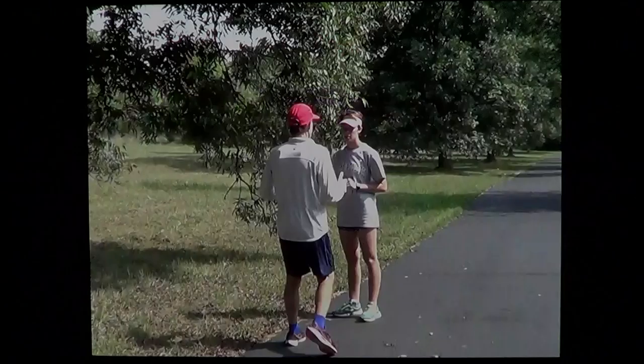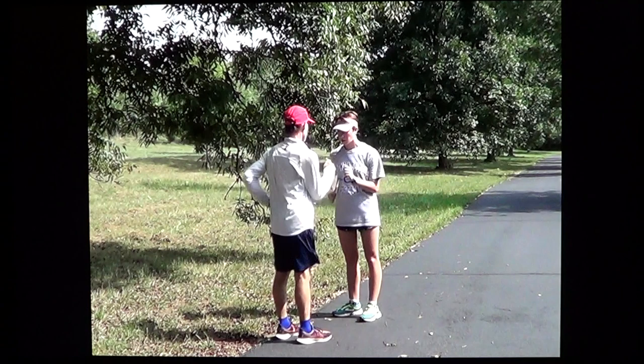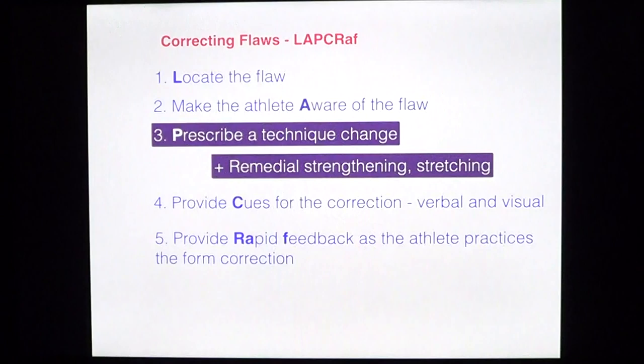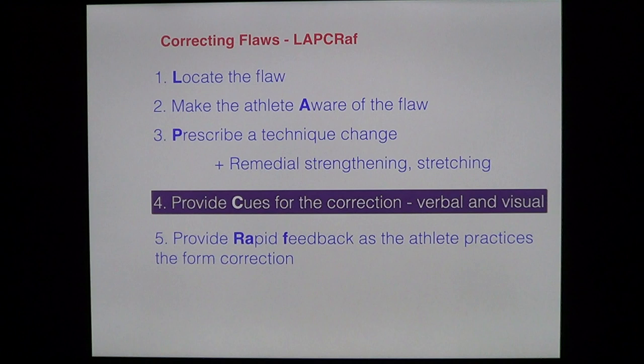The first thing to do is make the athlete aware of the flaw — if they don't know about it, they can't change it. Simply explaining, for example, that an athlete is dropping the hand too low may be enough for them to realize what they've been doing wrong and may correct right away. We prescribe a technique change — by that I mean we tell the athlete what they need to be doing differently. This may require additional strength work or stretching to be able to perform these improved techniques.